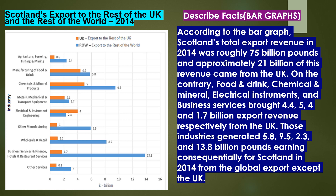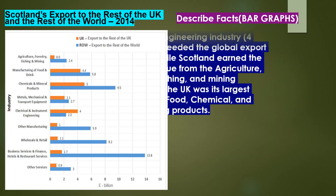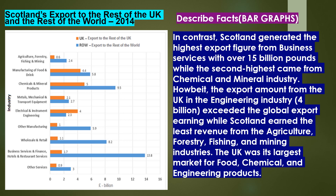On the contrary, food and drink, chemical and mineral, electrical instruments and business services brought 4.4, 5.4 and 1.7 billion export revenue respectively from the UK. Those industries generated 5.8, 9.5, 2.3 and 13.8 billion pounds earnings consequently for Scotland in 2014 from global exports excluding the UK. In contrast, Scotland generated the highest export figure from business services with over 15 billion pounds, while the second highest came from the chemical and mineral industry. However, the export amount in the engineering industry from the UK exceeded the global export earnings, whilst Scotland earned the least revenue from agriculture, forestry, fishing and mining industries. The UK was its largest market for food, chemical and engineering products.